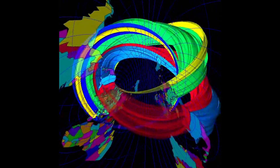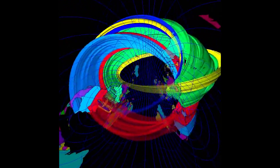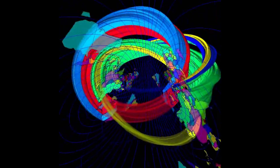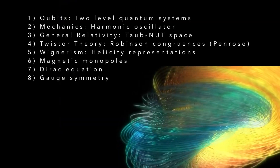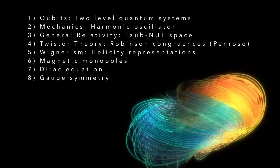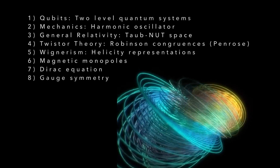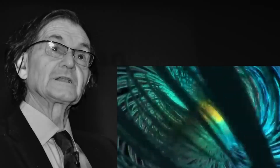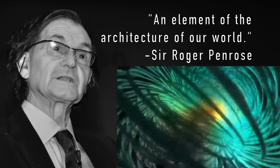And the unification is the unification of these two things in a structure called a Hopf bundle — H-O-P-F. You are looking at the most important object in the universe. Discovered by Heinz Hopf in 1931, Hopf fiber bundles pop up in at least eight different physics situations. As legendary physicist Roger Penrose put it, this is an element of the architecture of our world.